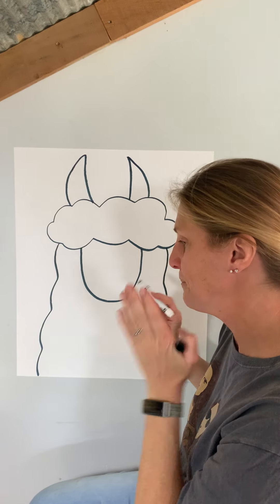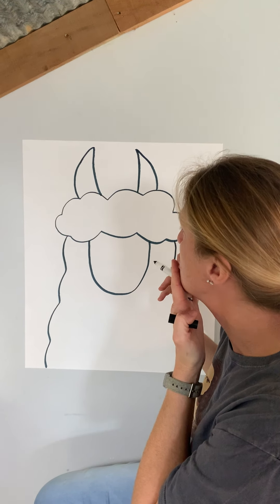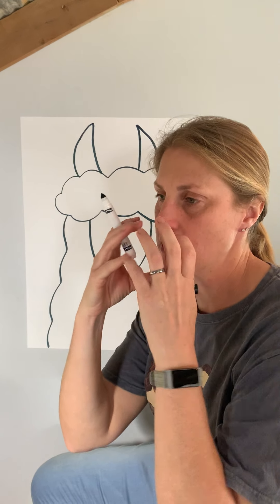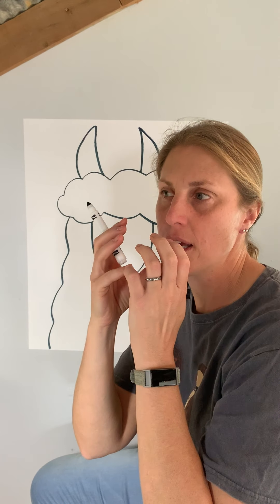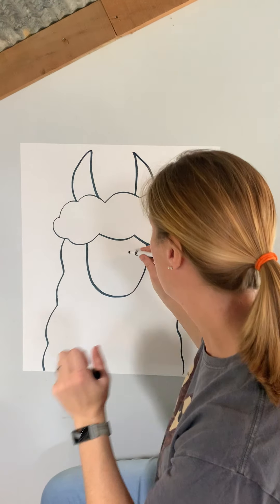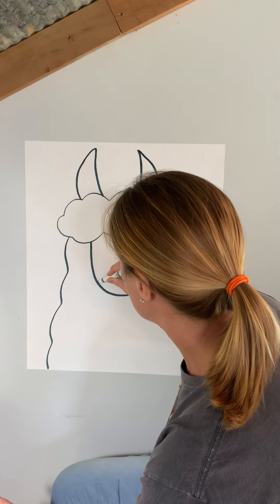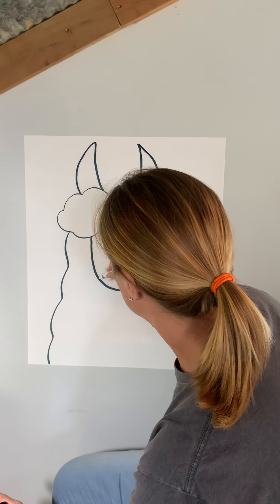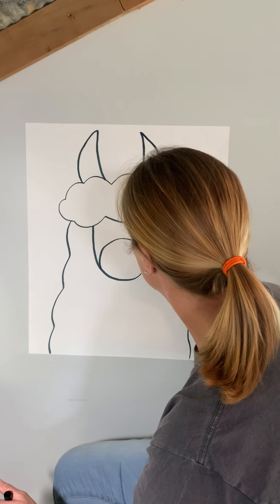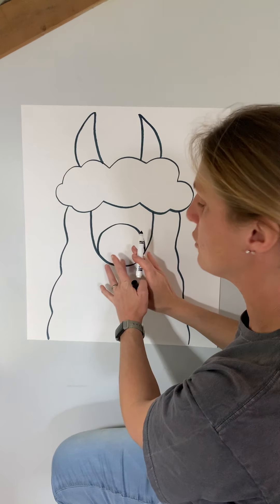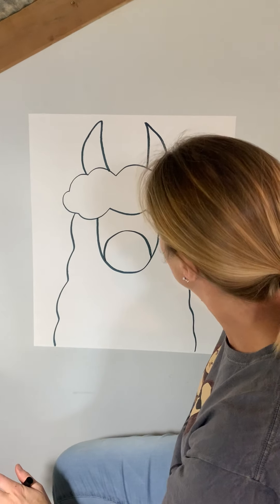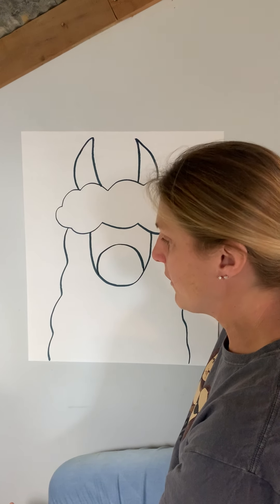Next I'm gonna do the alpaca's snout — is that what we call it? A snout, right? We're gonna do just a big circle inside the face, inside that U-shape, and this is gonna be the alpaca's snout.